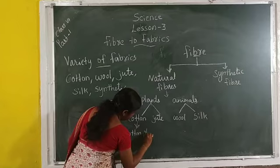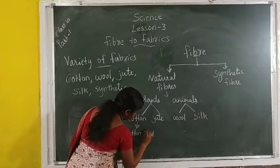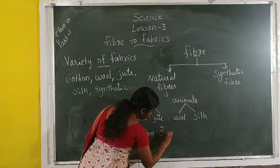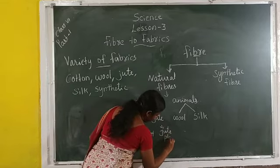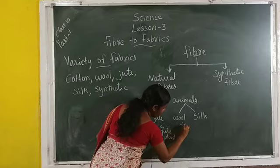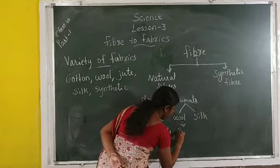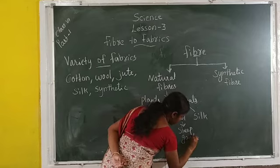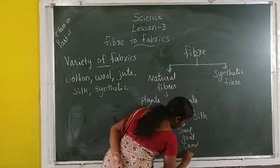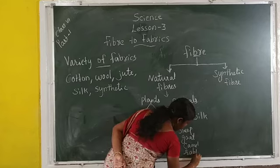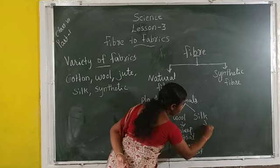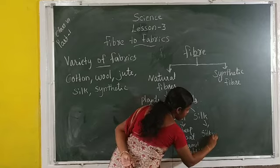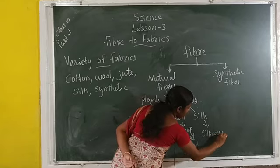Cotton is drawn from the cotton plant, jute from the jute plant. Wool comes from sheep, goat, camel, and rabbit. Silk is obtained from the silkworm.